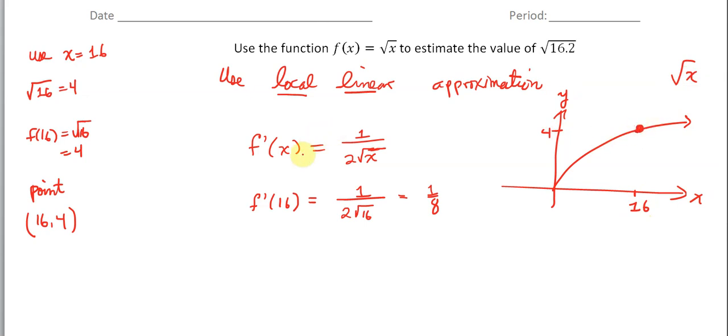And now we want to write the equation of the tangent line. So that would be, let me change up the colors here. This would be y is equal to, and you're using point slope form, 1 eighth times x minus 16 plus 4. So that would be, let me see if I can draw this well here. This would look something like that.